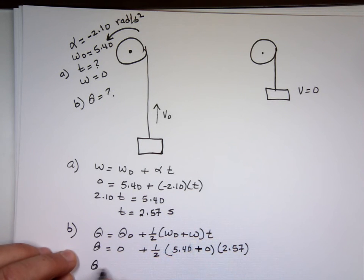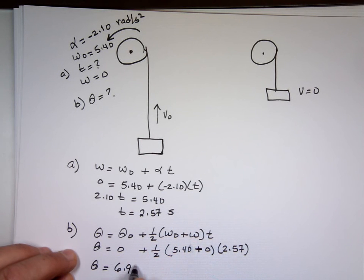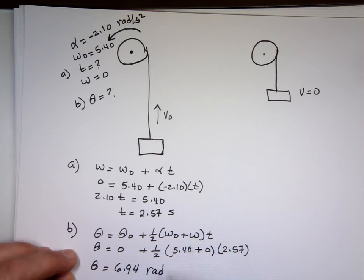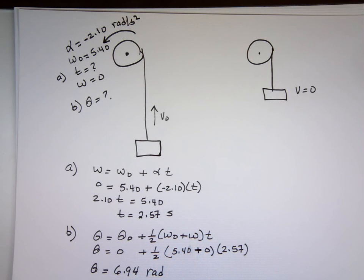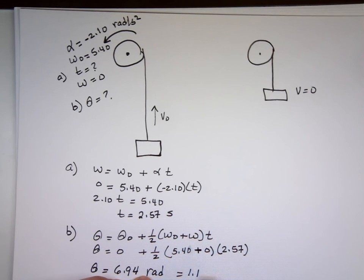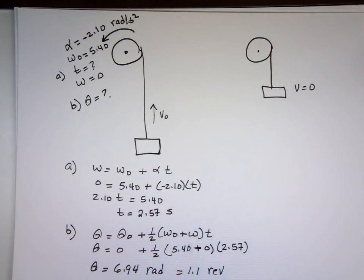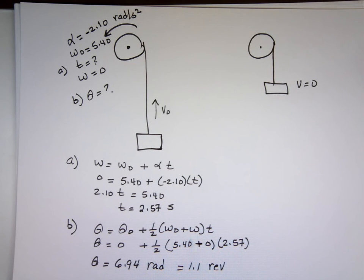If it doesn't say revolution, I'm fine with it. That's how far it traveled. If they want it in revolutions, you divide it by 2 pi, which is 1.1 rev. So I can ask the question in radians, I can ask the question in revolutions.